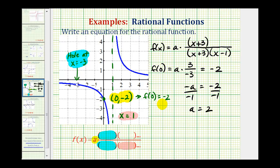Which means our rational function is f of x equals—since we have two times this fraction, we can put the two in the numerator. So we have two times the quantity x plus three divided by the quantity x plus three times the quantity x minus one.